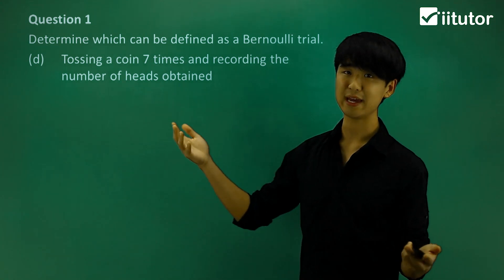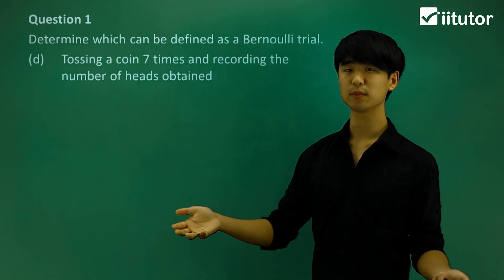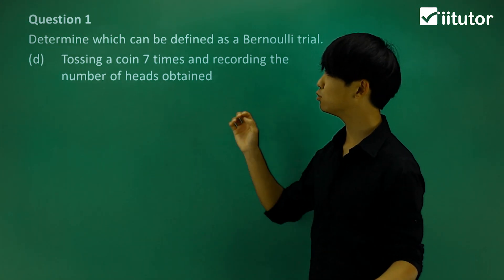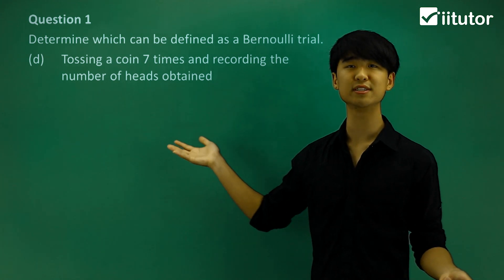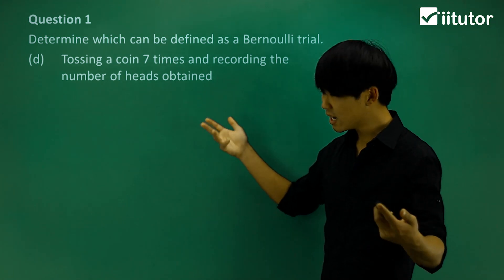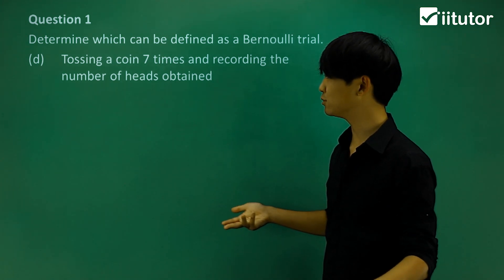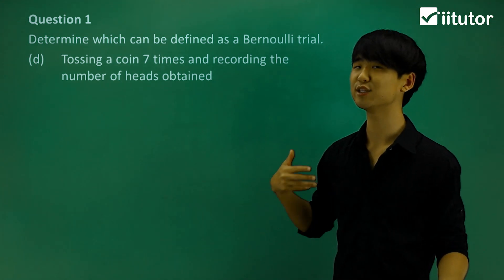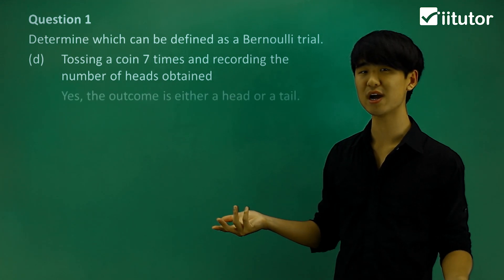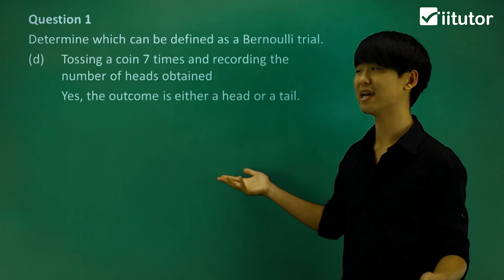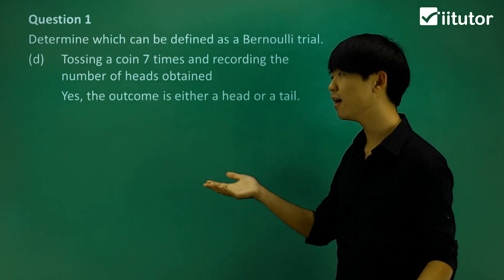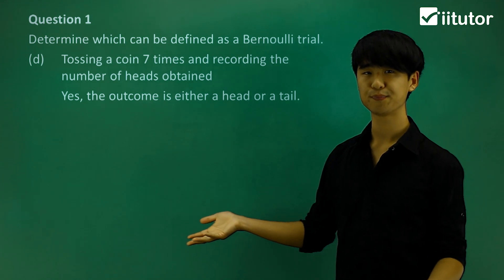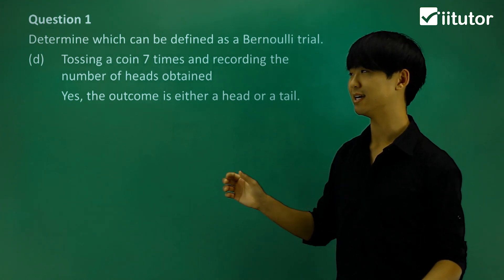We have tossing a coin — that was our classic coin example. Tossing a coin seven times and recording the number of heads obtained. Is this a Bernoulli trial? Yes, it is, because the outcome is either a head or a tail.